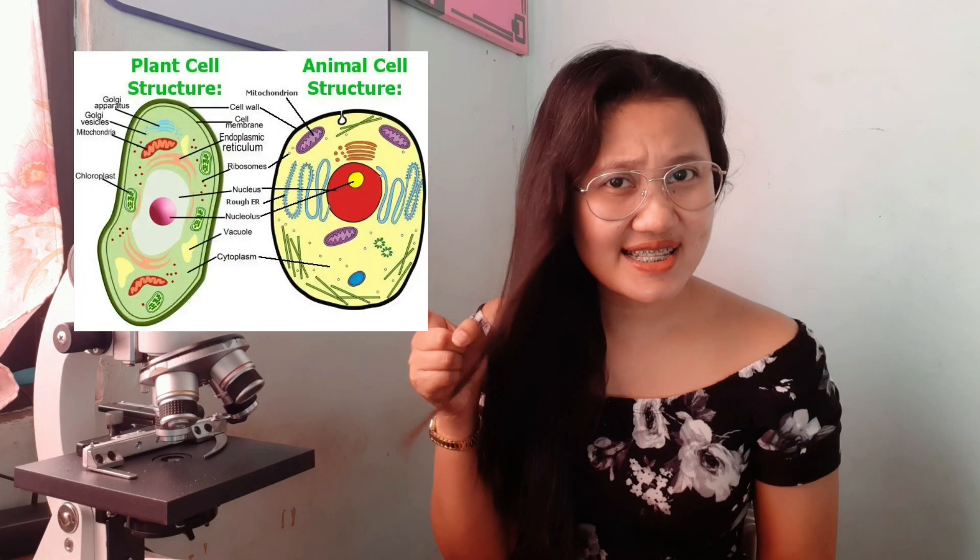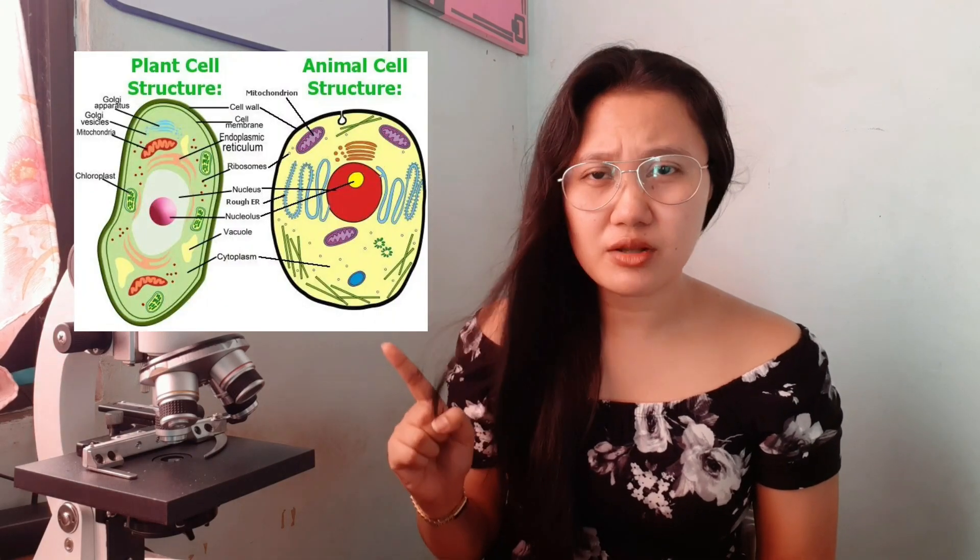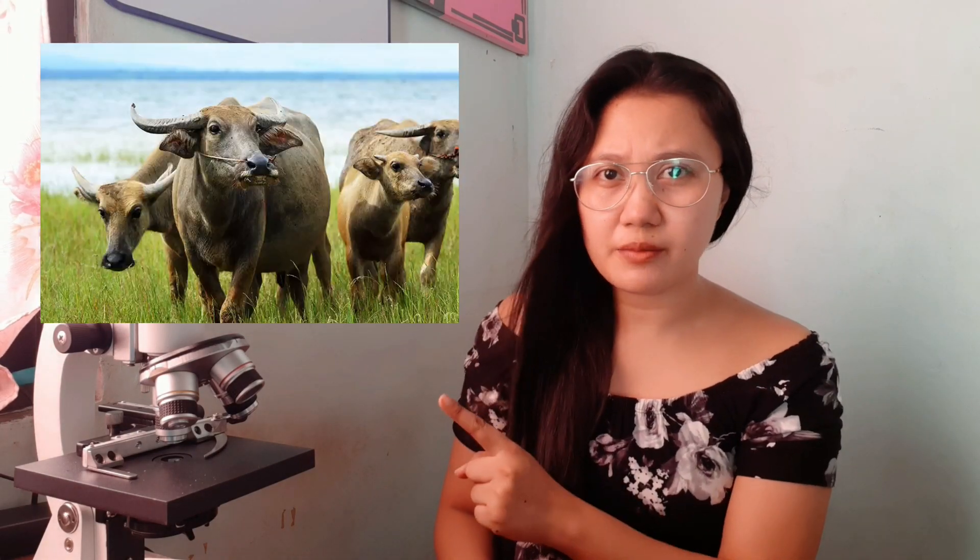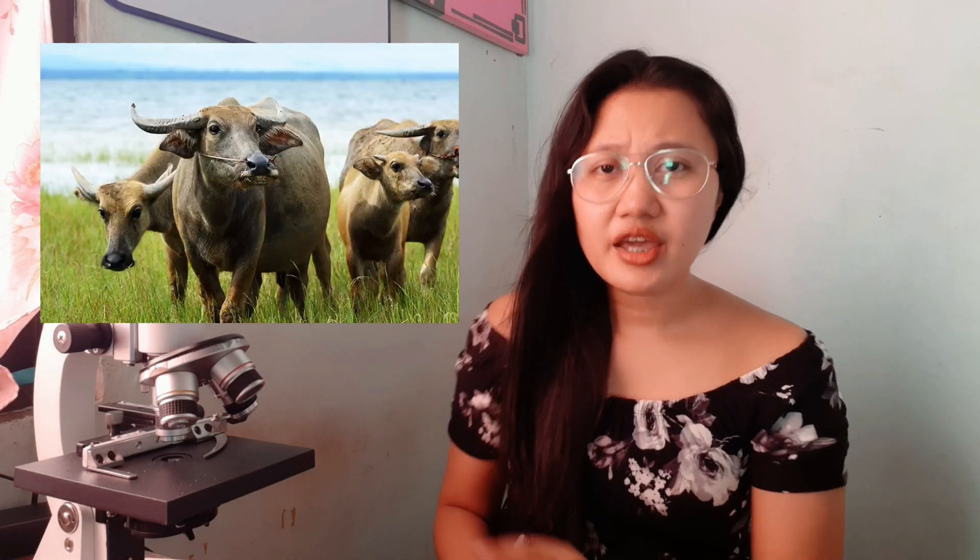Garlic, blood, plant cell, and animal cell. How about a carabao? Can you identify which of them can be seen with the naked eye or with the aid of a microscope?